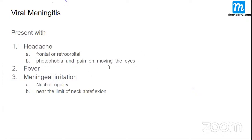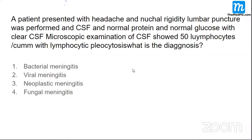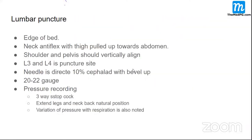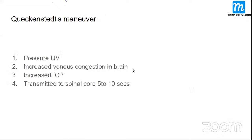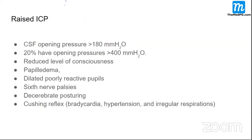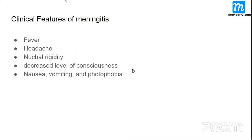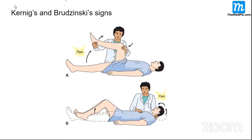I discussed two basic signs: Brudzinski sign and Kernig sign. The Kernig sign — I'll show the diagram. Just to help you memorize the Kernig sign — here it is. The Kernig sign is produced when you flex the hip and then try to extend the knee, you get a spasm.